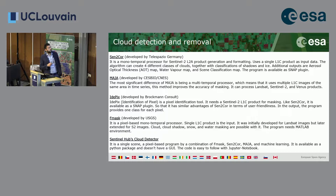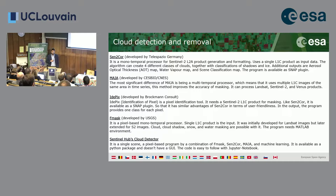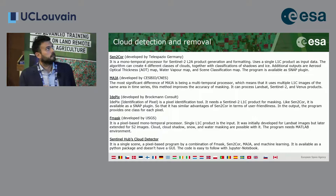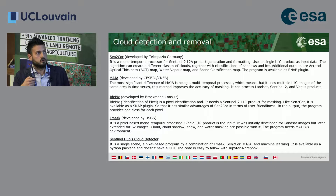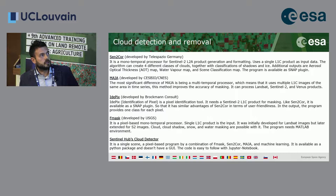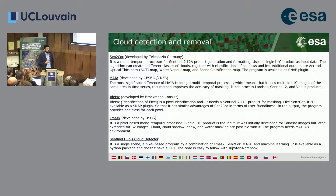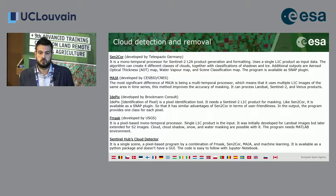MAJA is developed by CNES and CESBIO. It joins the MACCS processor with ATCOR coming from DLR. We have iDePix, developed by Brockmann Consult, which doesn't apply atmospheric correction but identifies and assigns a class to each pixel — cloud, cirrus, cloud shadow, or clear pixel. Fmask, developed by USGS, was designed for Landsat but has been adapted for Sentinel-2. There is also the Sentinel Hub cloud detector, which combines Fmask, Sen2Cor, MAJA, and machine learning — it should be very powerful, but I cannot provide feedback as I haven't used it yet.